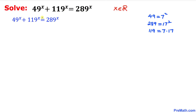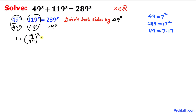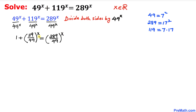Now, focusing on our given equation, we are going to divide it by 49^x across the board. This reduces the first term to 1, and the next fraction can be written as (119/49)^x, and likewise the last fraction becomes (289/49)^x.